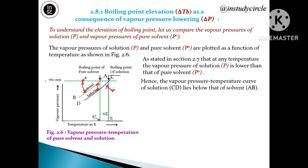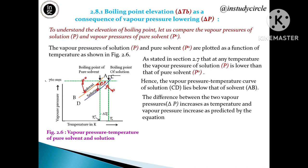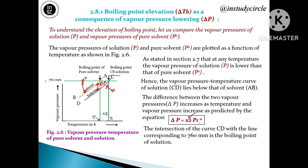The difference between the vapor pressure of the solvent and the solution is delta P, which represents the lowering of vapor pressure. This difference delta P increases as the temperature and vapor pressure increase, as predicted by the equation: delta P = x₂ × P0.